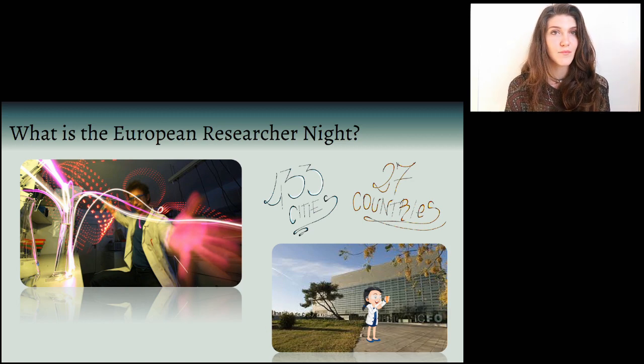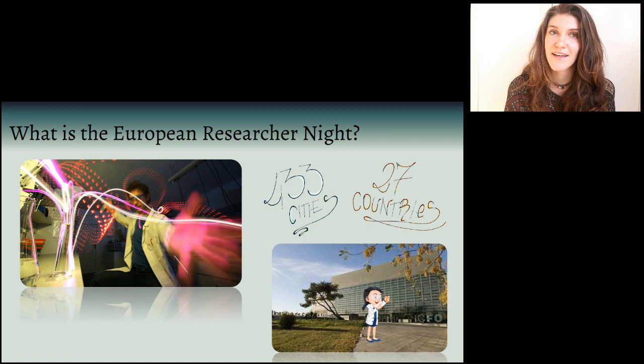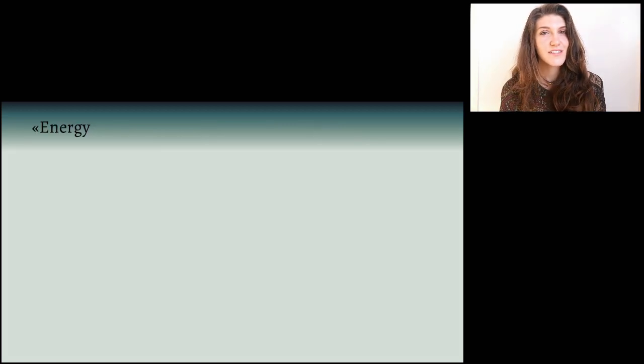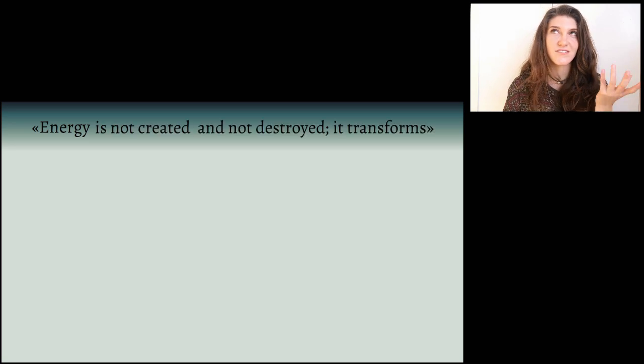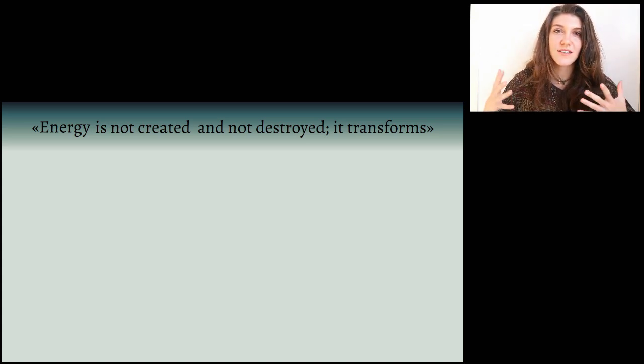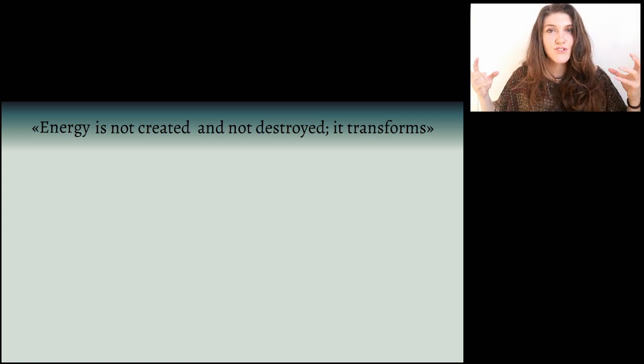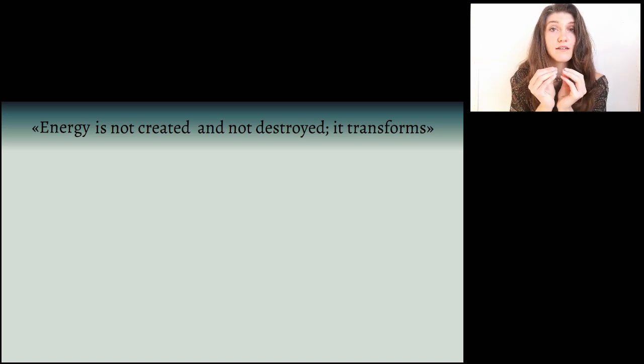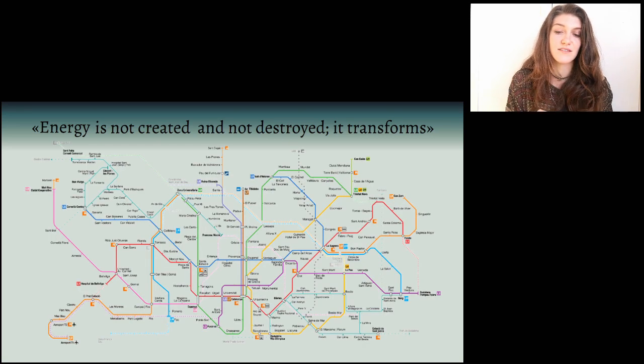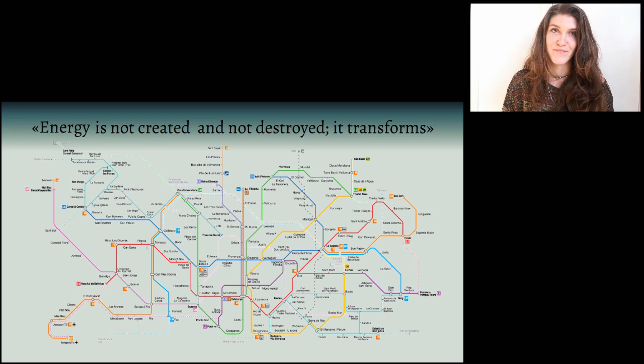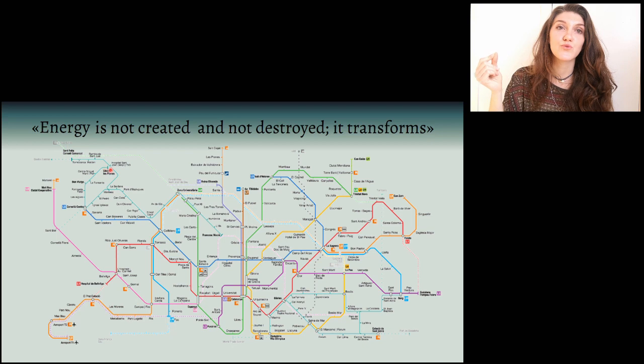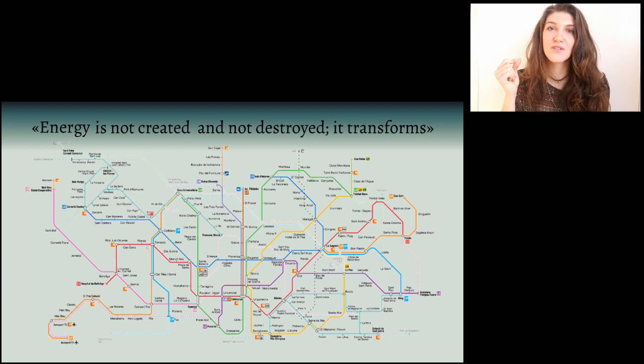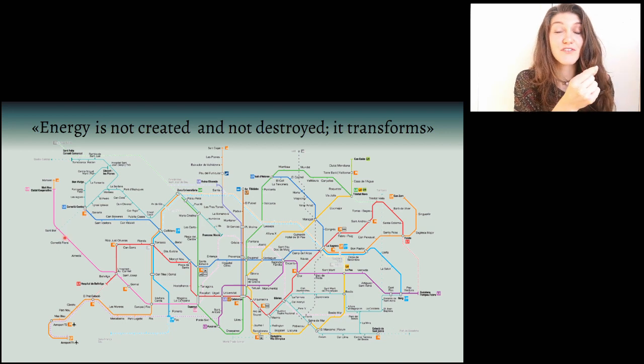And today I'm talking to you about energy. Energy is not something that is created and not something that is destroyed, but it is something that transforms. And if there is one thing that science taught me, that is that if you want to describe the complexity of the world around us, you just need to put it into a simple scheme, as a metro map does with the complexity of the city as Barcelona. So let's pretend that energy is a passenger on this metro line and it is able to move, it acts to transform between different stations or different forms of energy.